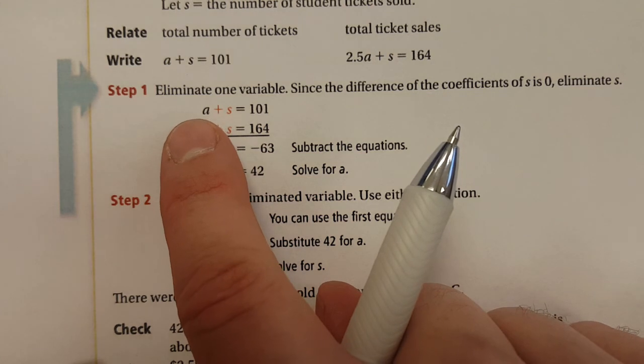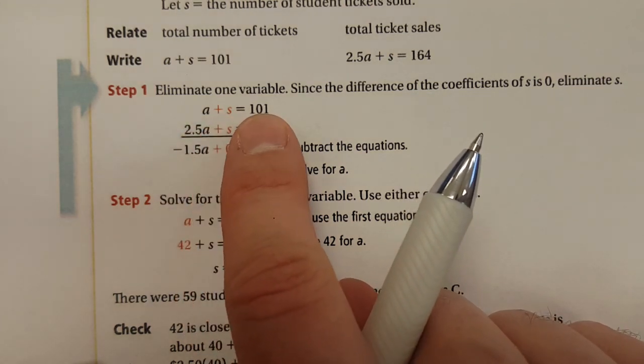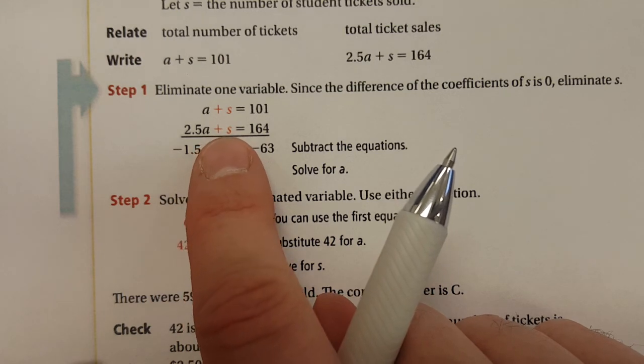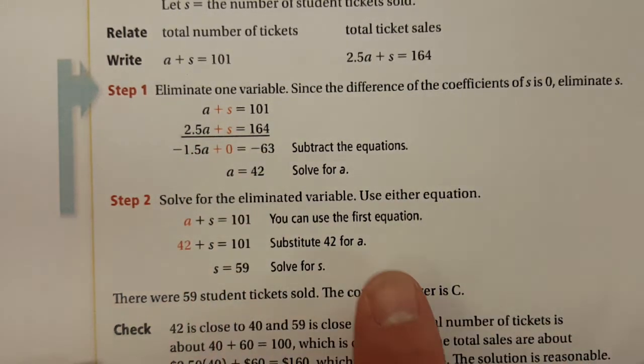In this mathematical situation you have adult tickets and student tickets. They've sold 101, it's $2.50 for adults, and then it is $1 for students and they sold $164.